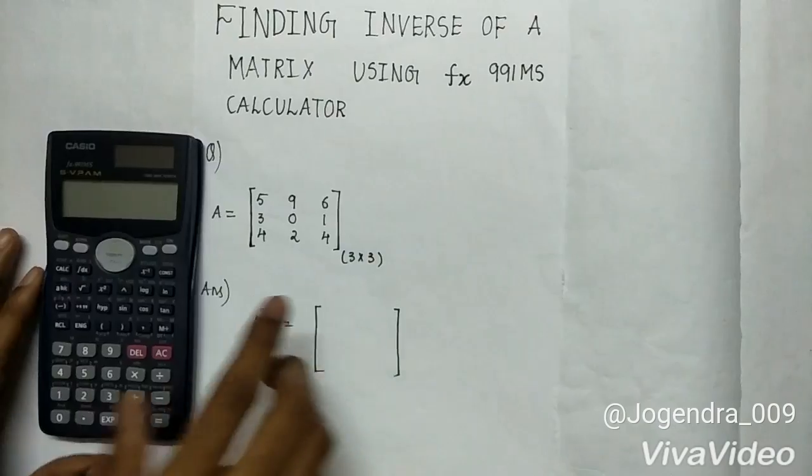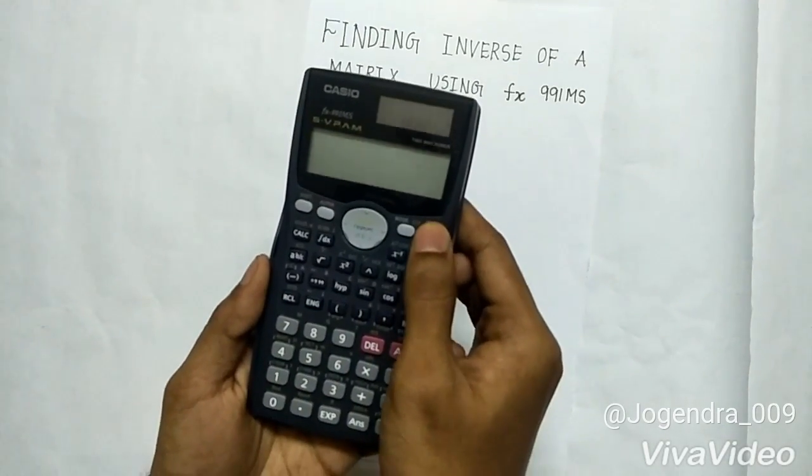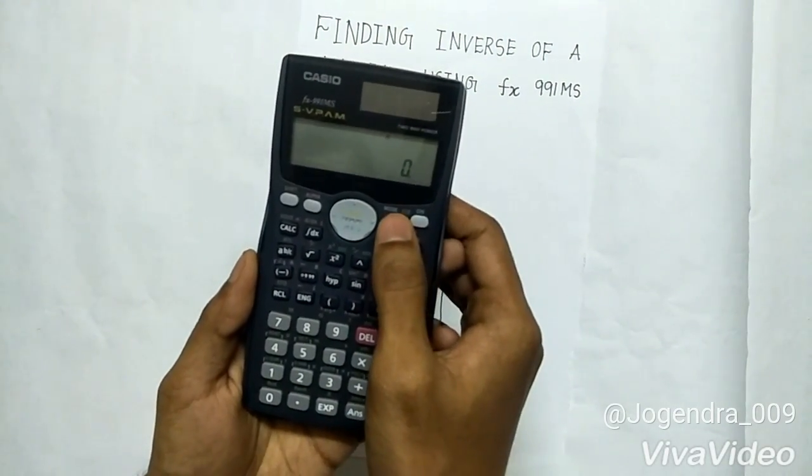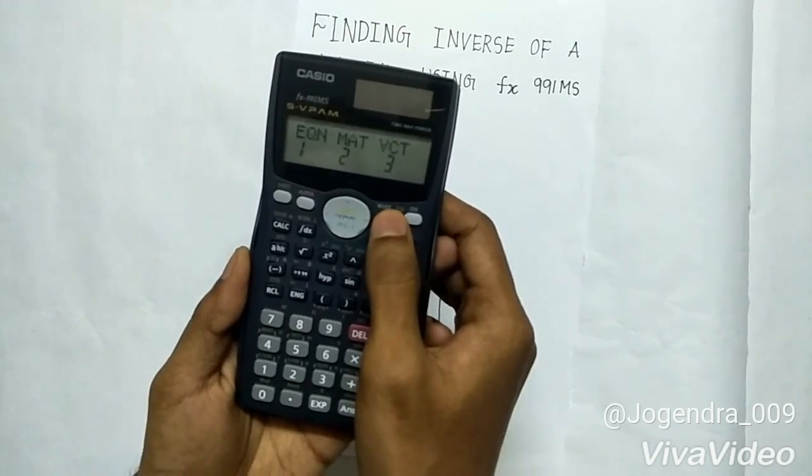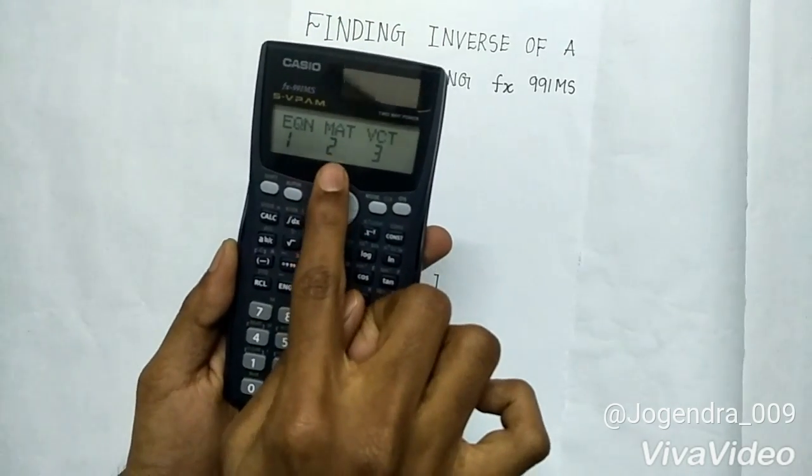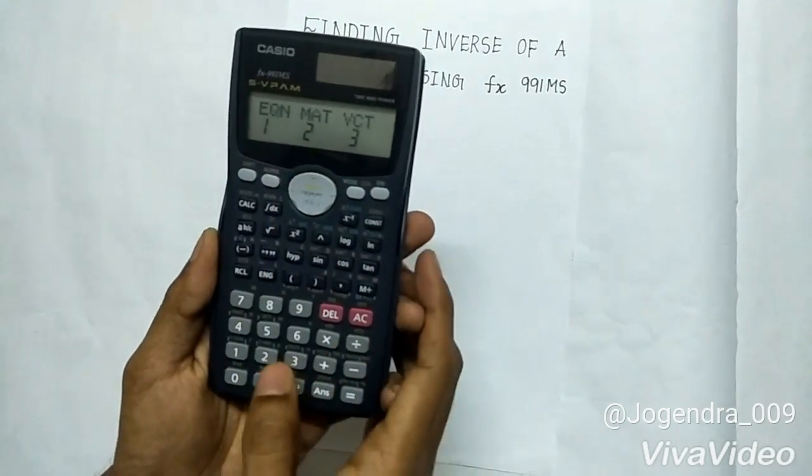Let us set the mode of calculator to matrix. Turn on the calculator, press the mode button 3 times. You can see mat under number 2. So press 2.